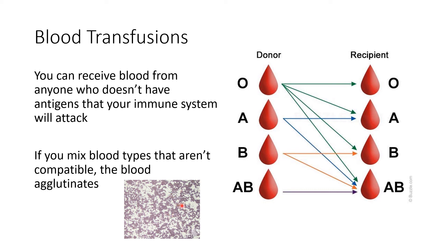For this reason, type O blood is considered the universal donor, because since it has no surface antigens at all, nobody's immune system is going to attack it — so it can donate to all four blood types. Type AB is considered the universal recipient because, since it has both surface antigens, it produces no antibodies at all, meaning anyone can donate blood to type AB without risk of the immune system attacking the transfused blood.